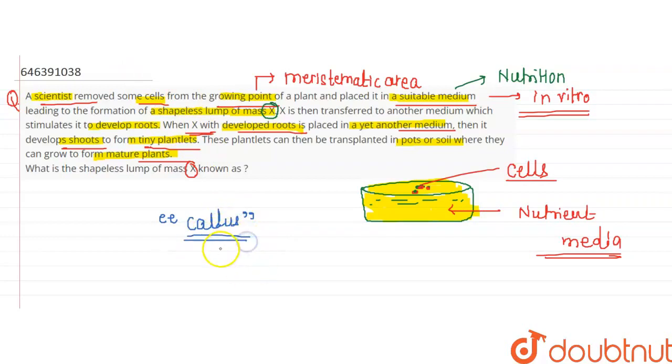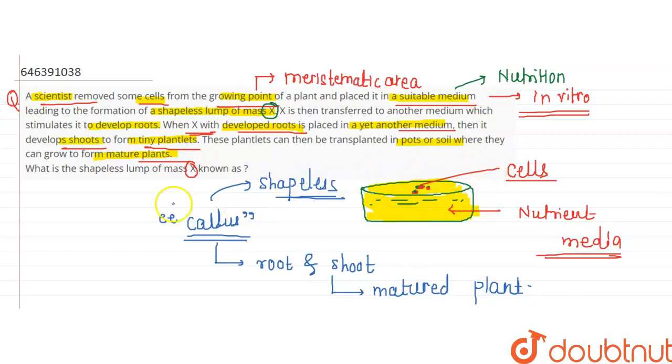Here we have callus grow, and this callus develops root and shoot, and after this becomes a matured plant. So this callus is a shapeless lump of cells, and this is our answer.